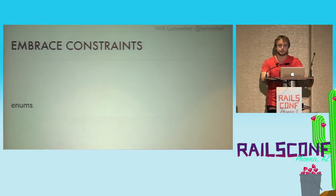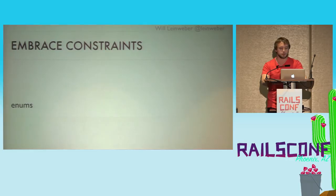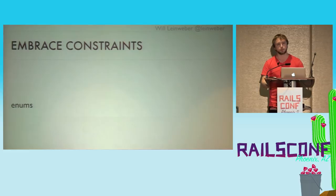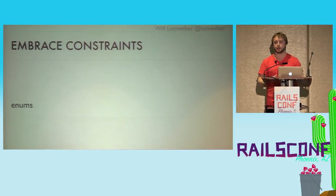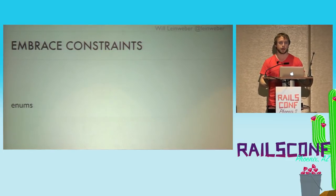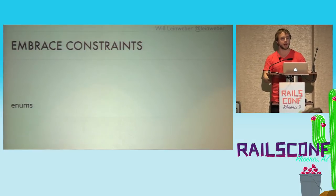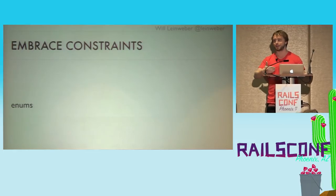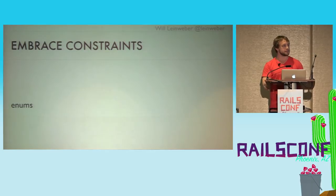Enums are ones I'm not completely sold on, but I'm using them more. They're good for small sets of keys you're not going to change very often. For example, I'm using them for AWS regions — they do add more regions over time, but not that often. This prevents little typos; I once typed 'US last one' instead of 'west' manually in IRB, and that got saved. So enums prevent these small errors.